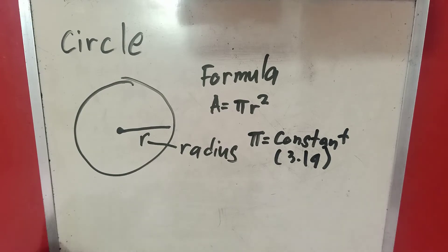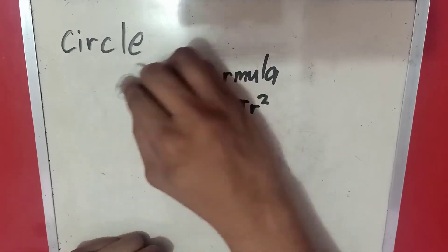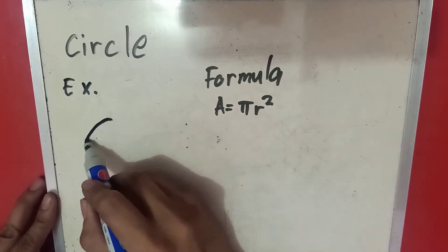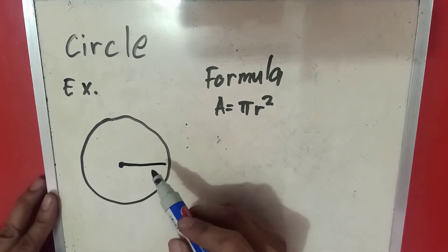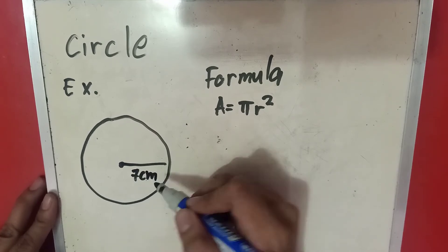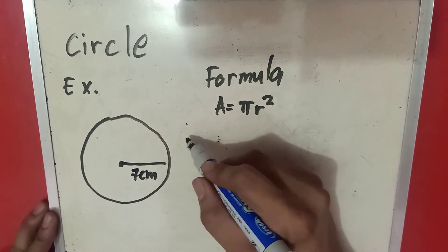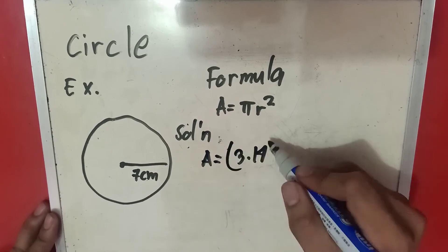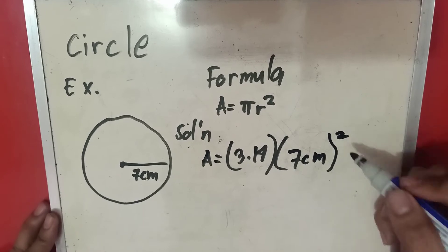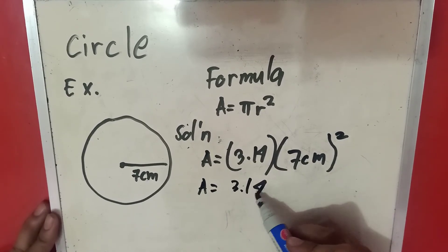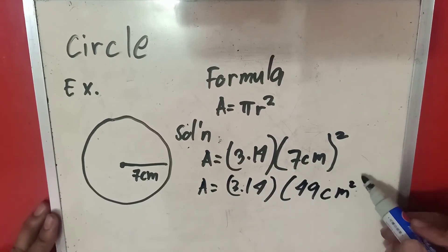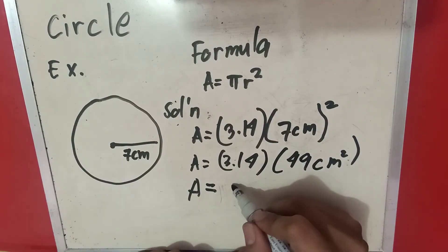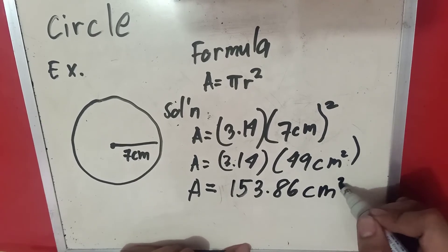Let's have an example. We have a circle with a radius of 7 cm. We substitute the given value: area equals 3.14 times 7 squared. 7 squared is 49, so area equals 3.14 times 49, which equals 153.86 cm squared.